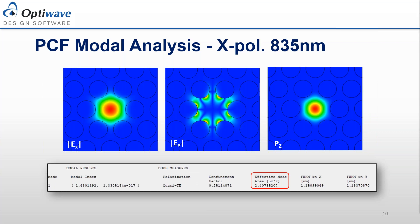Once OptiMode runs its calculations, it determines the modes and provides information for those modes. For example, here we're taking a look at field distributions. We're also provided the modal index, the effective mode area, as well as the group velocity dispersion and third-order dispersion.